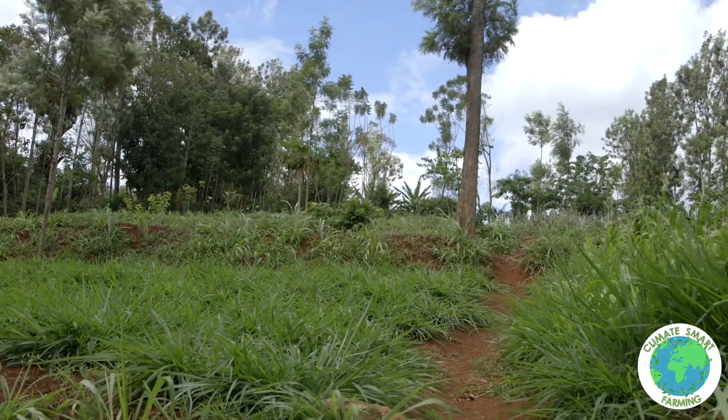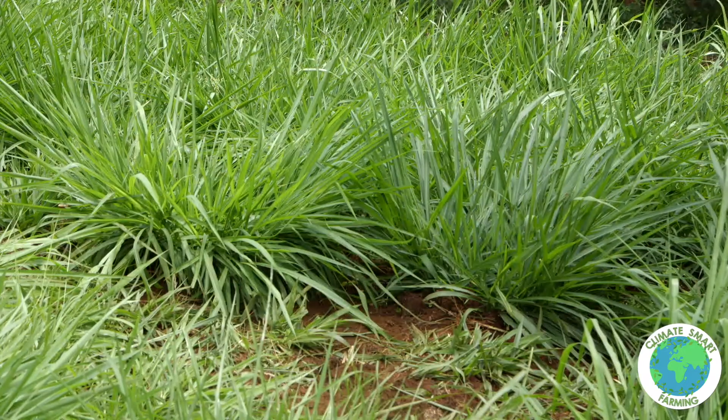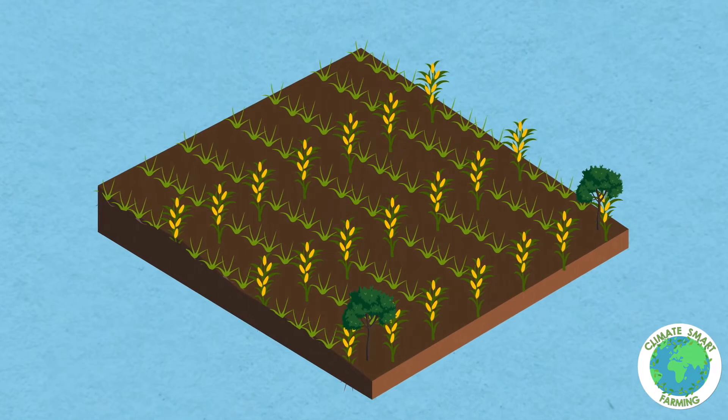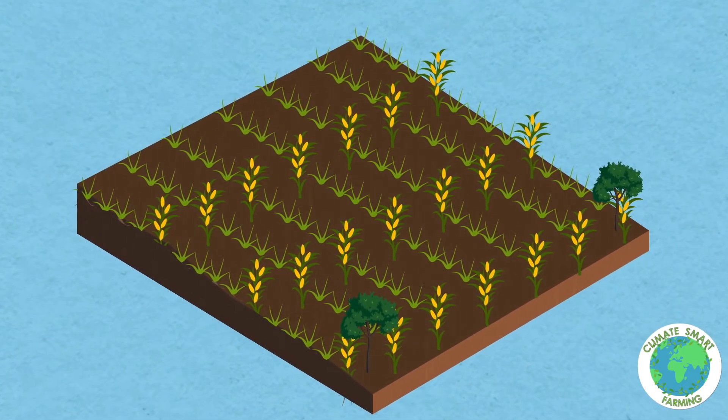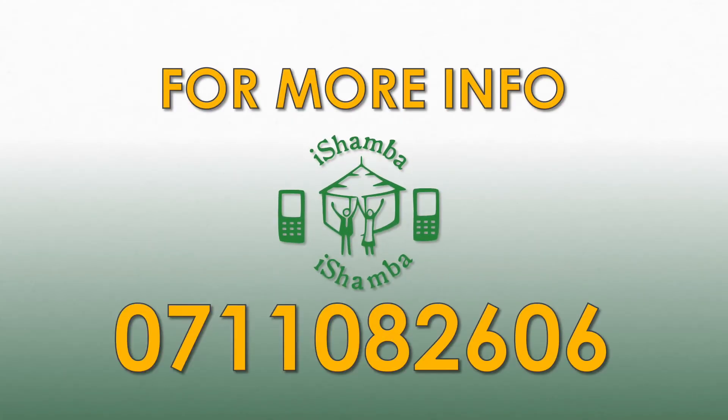You can also plant trees or fodder crops such as napier grass along the contour. These will help hold your soil together on the hillside and protect your land from erosion.